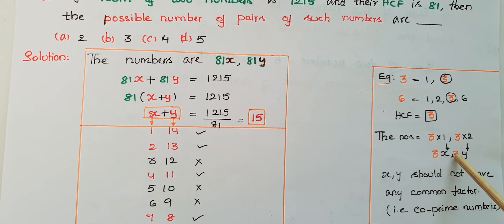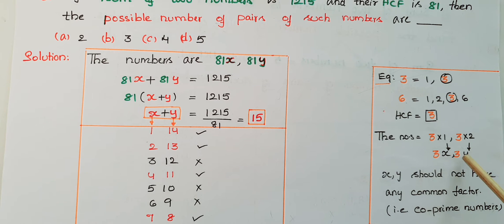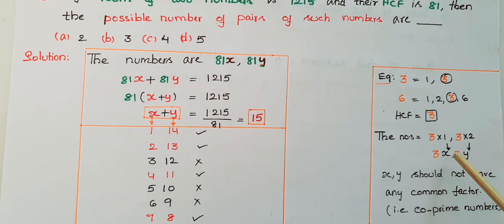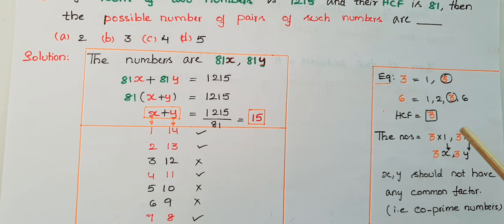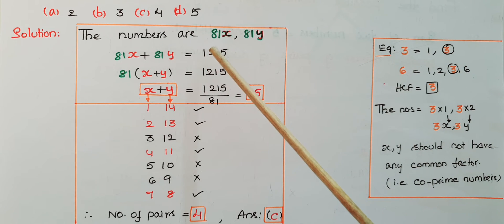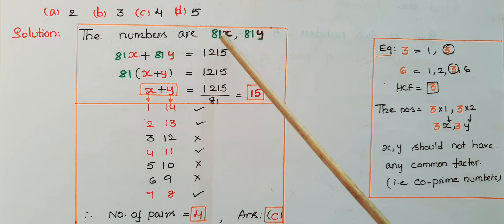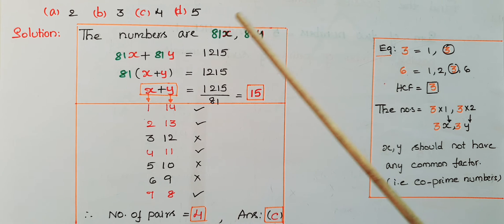Here 3 is the HCF, so the numbers are written as 3x and 3y. The values x and y should not have any common factor, because the HCF is already taken out as the highest common factor — meaning x and y are co-prime numbers. For example, 6 and 11, or 5 and 7, are co-prime numbers with no common factor. Since HCF is 81, we assume the numbers as 81x and 81y.